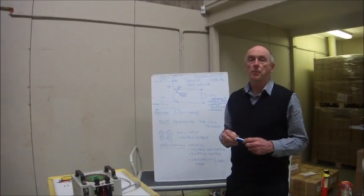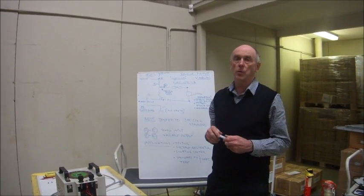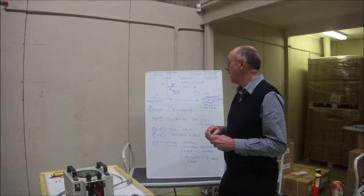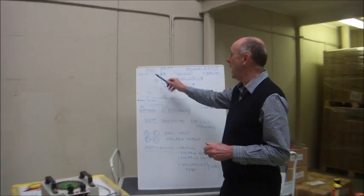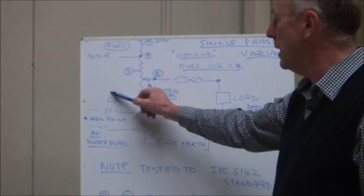Variacs are normally made as a toroidal transformer, that is they are a circular transformer. So typically you have an active coming in at 240, you have a neutral coming in at zero volts.